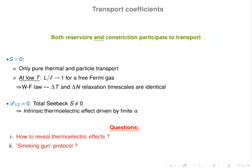If the total Seebeck coefficient vanishes, particle and thermal transport are decoupled. At low temperature one can show for a free Fermi gas that the ratio between the two Lorentz numbers tends to one, giving a picture for the Wiedemann-Franz law—at low temperature the timescales for heat and particle transport are the same. Another key point: even if the junction itself has no thermoelectric properties (L12 = 0), the total Seebeck coefficient is not necessarily zero, meaning there is an intrinsic thermoelectric effect driven by the finite dilatation of the reservoirs.